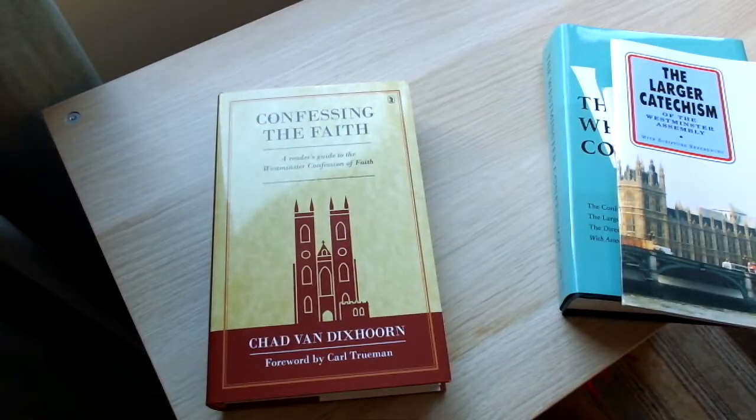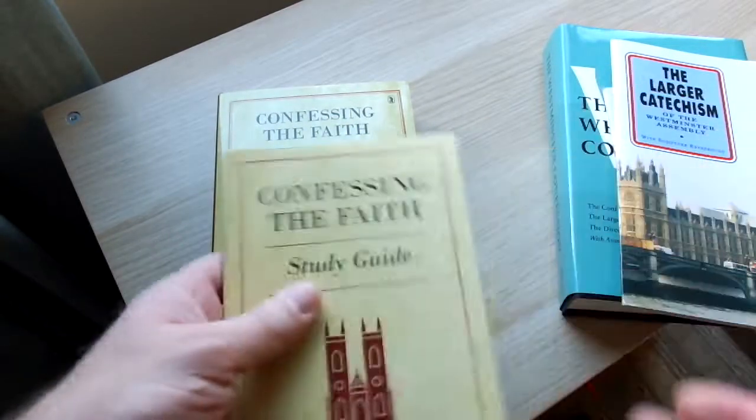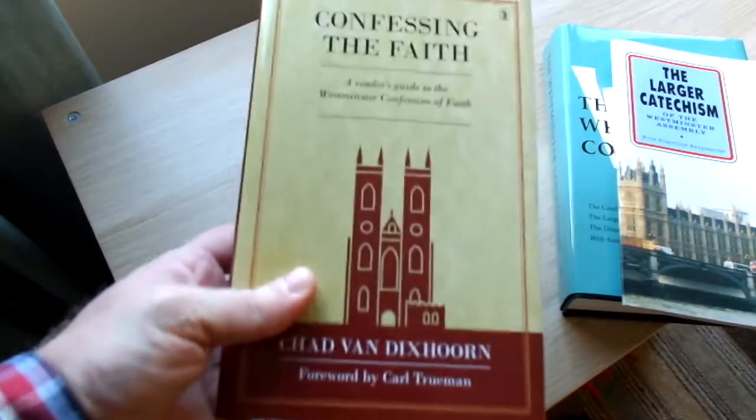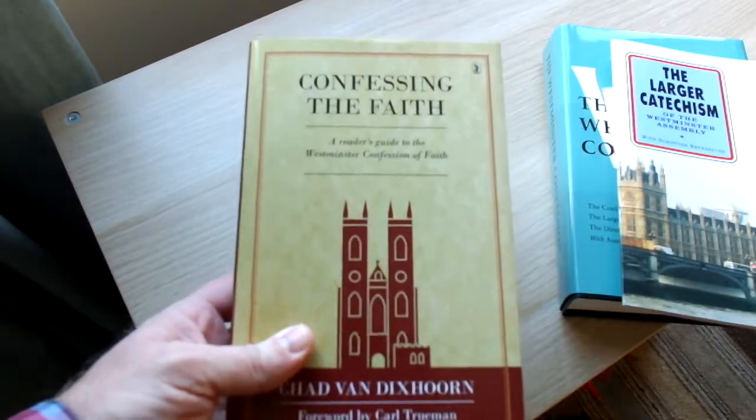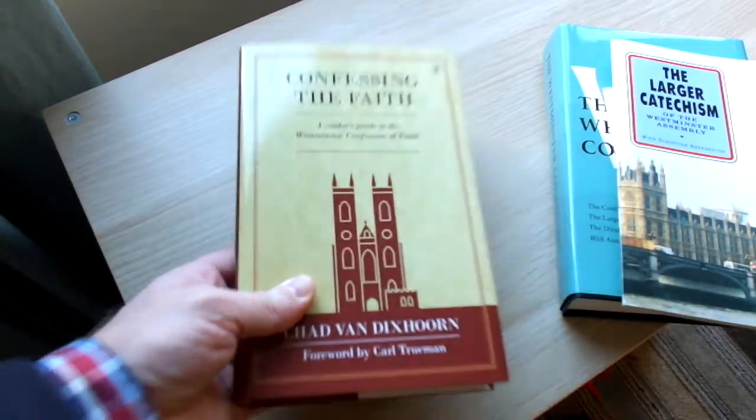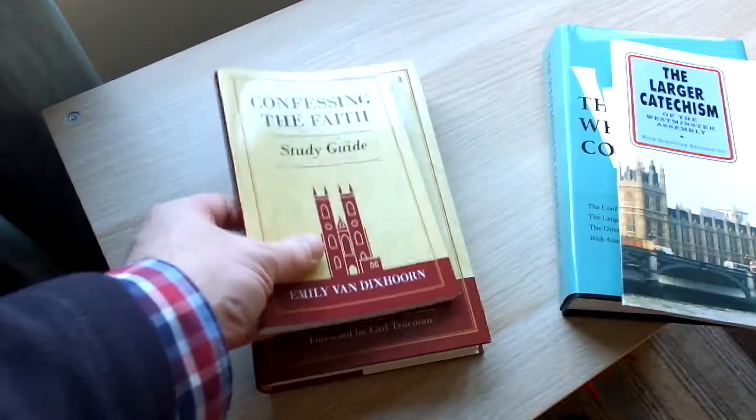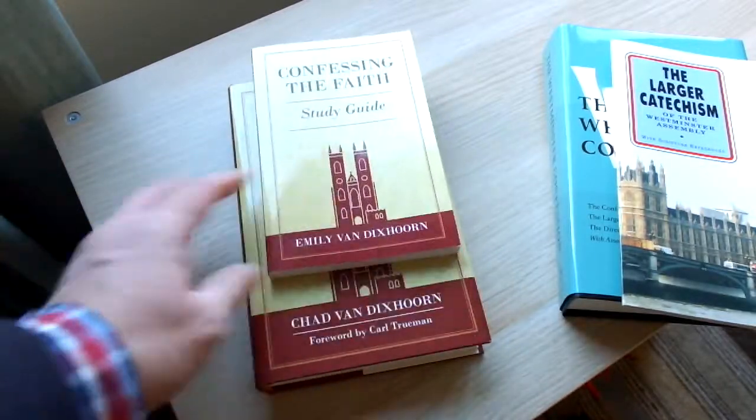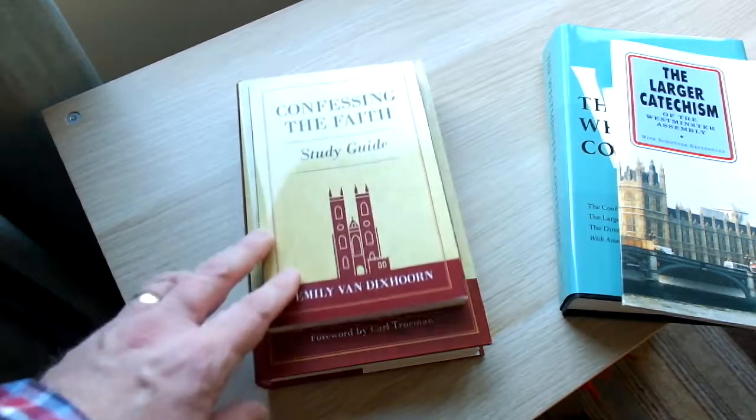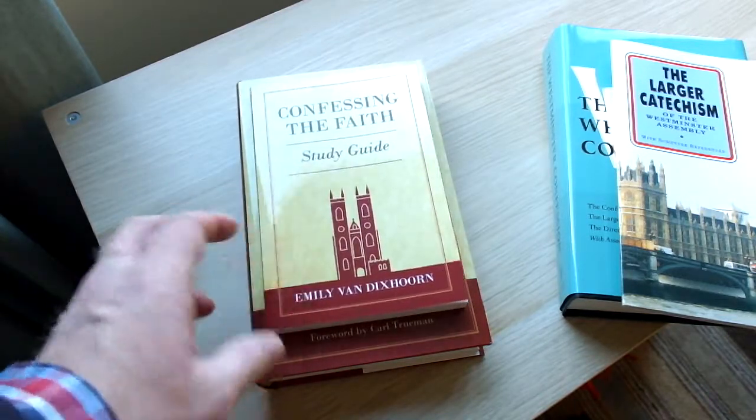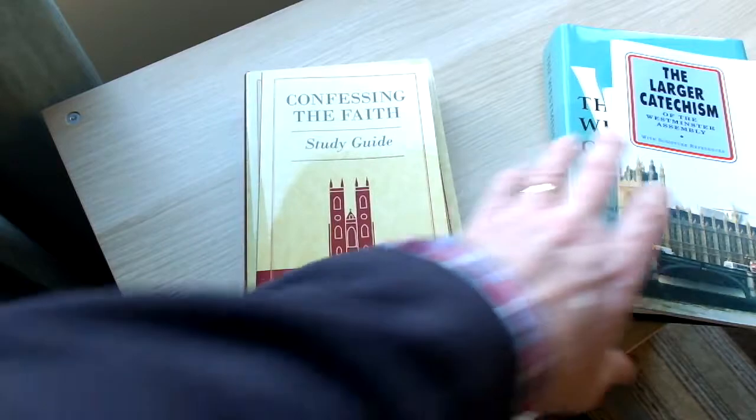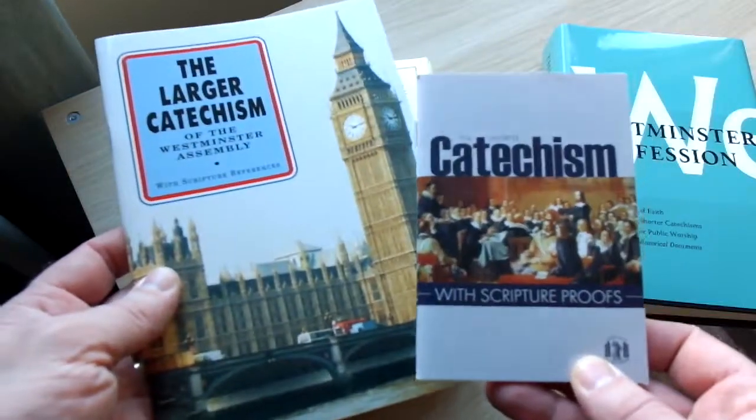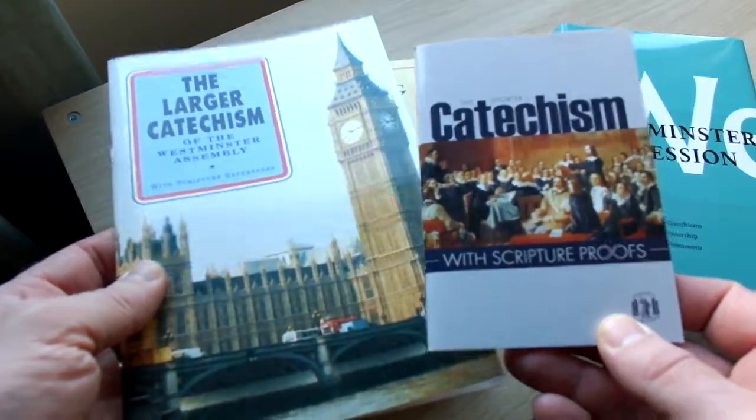I've lost one of them, and there it is, it's down here. So it also came with the Confessing the Faith book, which is a reader's guide to the Westminster Confession. It also came with the study guide that goes with that. The Confessing the Faith is by Chad Van Dixorn, as you can see on there. And then you've got the study guide, which was put together by his wife. And also it came with these two little booklets, the larger and shorter catechisms of the Westminster Assembly.